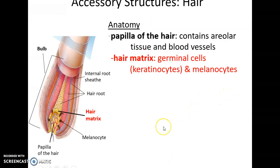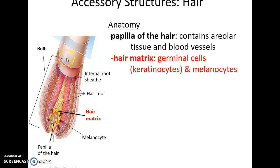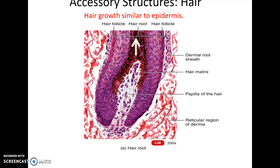At the very base of the hair follicle and hair root is the hair matrix — germinal cells that are dividing and producing more hair cells, including keratinocytes and melanocytes. Keratinocytes make new cells that push the cells above them upward. Also found here is the papilla of the hair, which contains areolar connective tissue, blood vessels, and capillaries to supply nutrients to the hair matrix. Cells grow from the hair matrix and get pushed further and further up — this is why cut hair continues to grow.